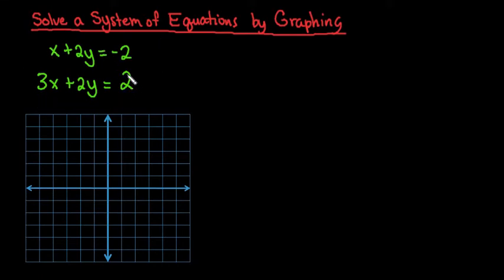So for this particular example, this one is not already in slope-intercept form, the y equals mx plus b form, that is the easiest to graph from. So the first thing that we want to do is solve each of these equations for y.